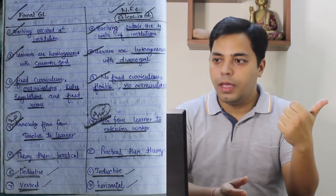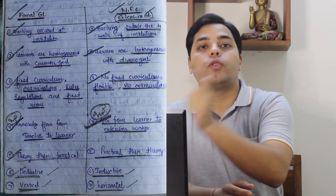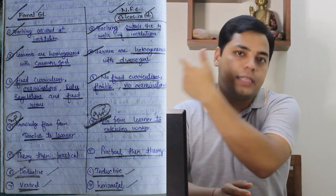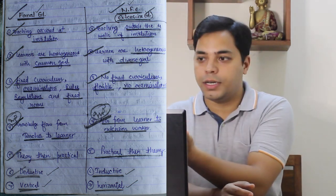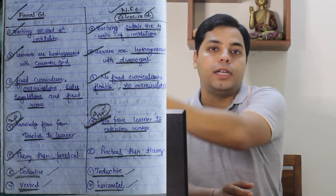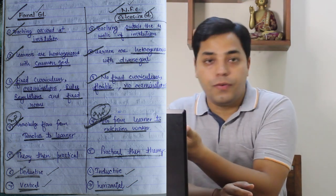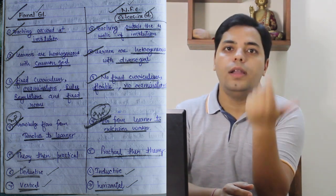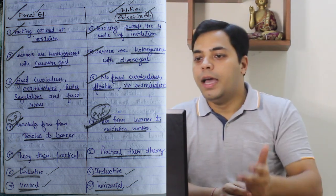A five-mark question often asks: what is the difference between formal and non-formal education? In formal education, teaching occurs at an institution — classical examples are school and university classes. In non-formal education, teaching occurs outside the four walls of college — examples include village seminars, demonstrations, and training in farmers' fields. In formal education, learners are homogeneous — those who passed 12th class are in first-year B.Sc. Agriculture together.